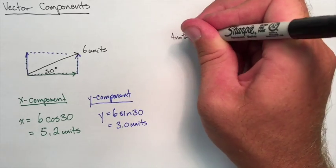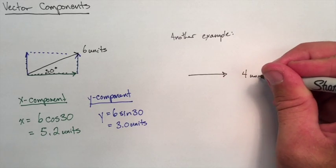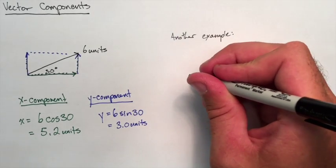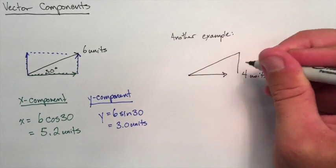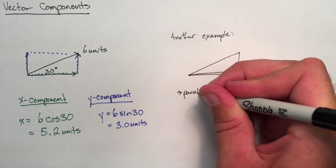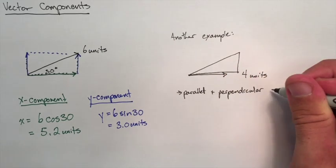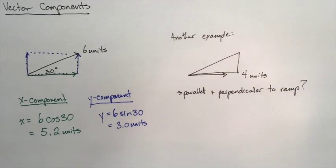A second example here. We're going to use a vector just pointing east that's 4 units. But we're going to add a ramp around it. And what we want to do here is we want to find the components of this vector that are parallel and perpendicular to the ramp.